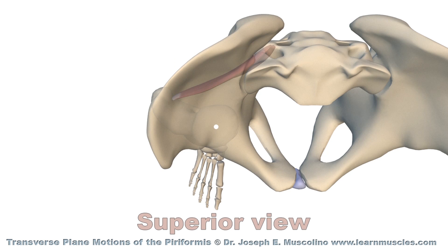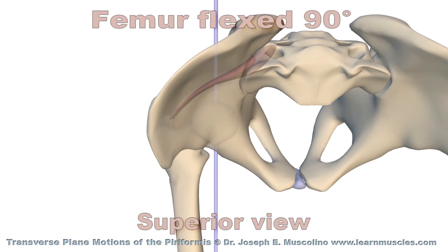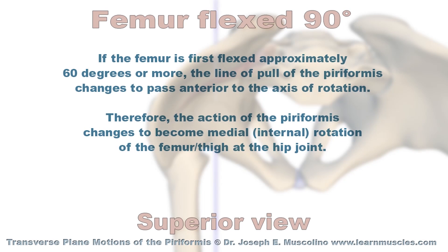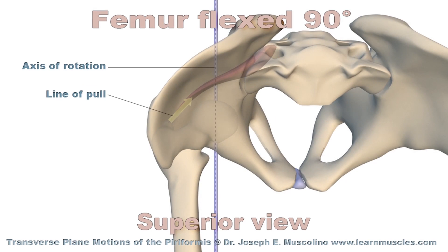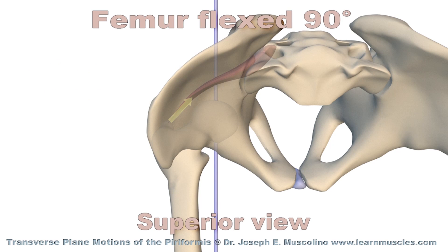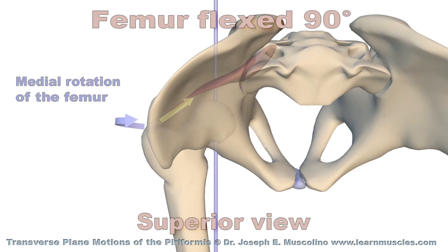Now the femur is flexed 90 degrees again. And again, if the femur is flexed approximately 60 degrees or more, the line of pull of the piriformis changes to pass anterior to the axis of rotation. Therefore, the action of the piriformis changes to become medial rotation of the femur at the hip joint. The axis of rotation is represented by the blue dashed line. The line of pull of the piriformis is represented by the yellow arrow. Now when the piriformis contracts, it creates medial rotation of the femur.